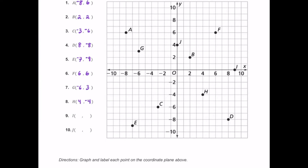Now how about I? For I, that's going to be over here on the positive x-axis. Start at the origin, move nine units to the right, and then in terms of up and down we're not moving anything, so that's just zero. So we put nine comma zero.